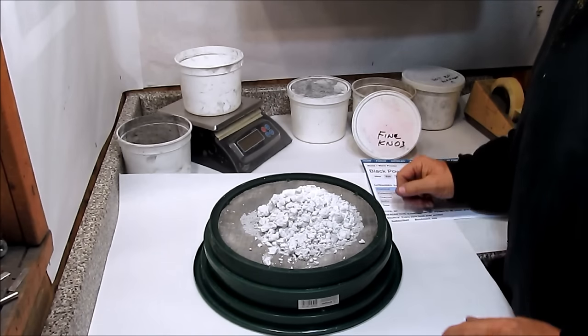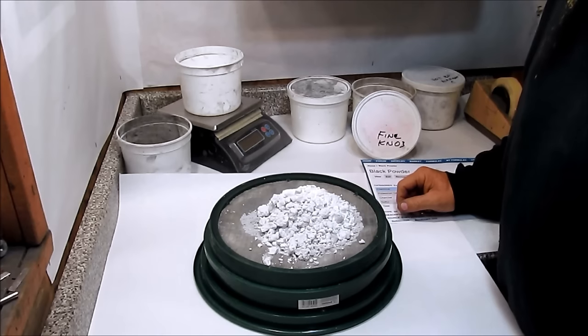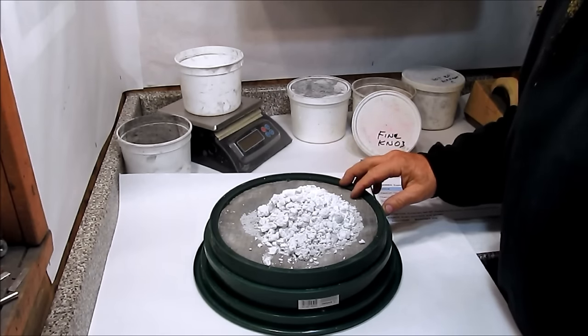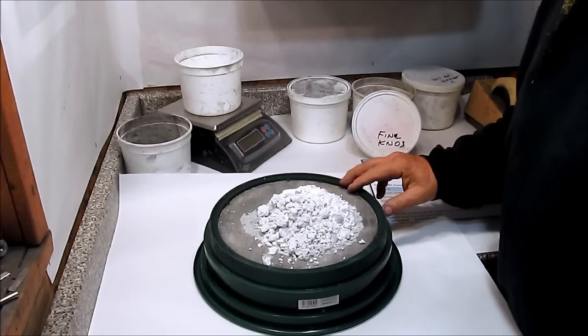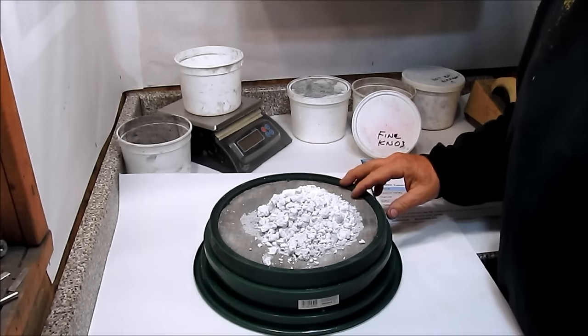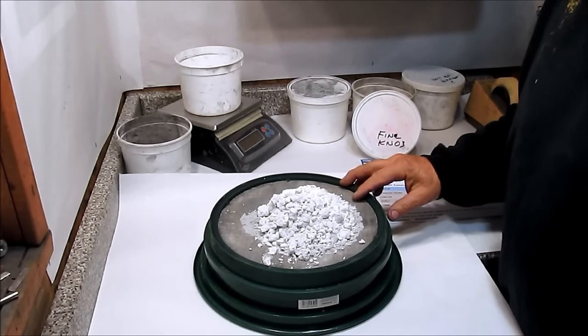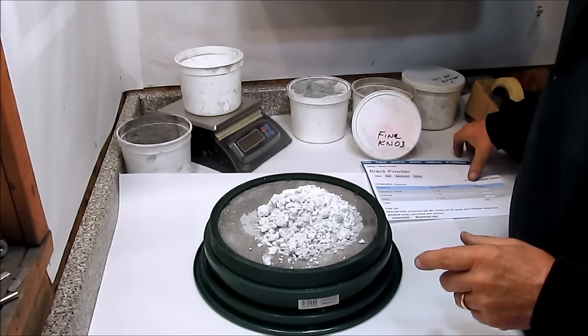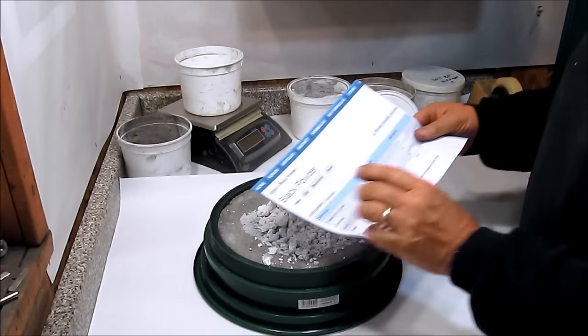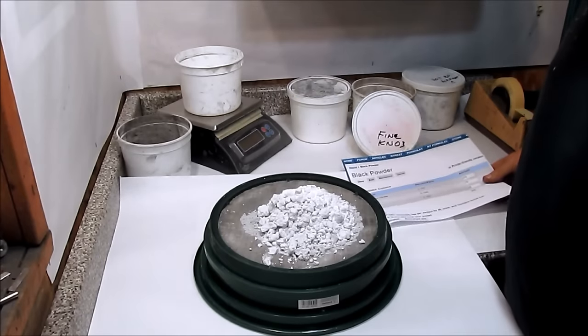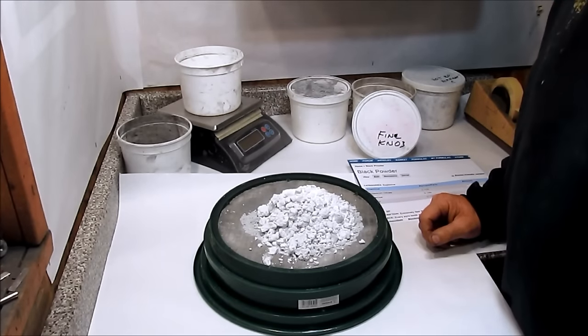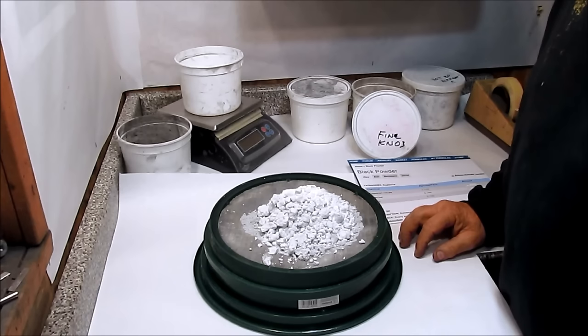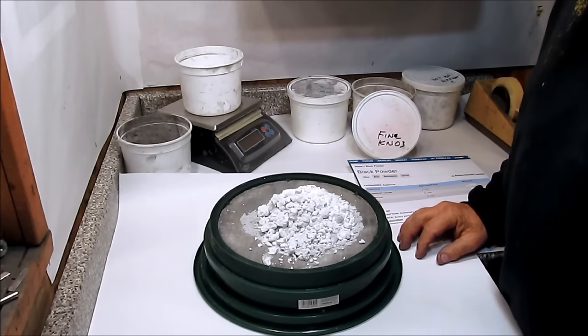Weighing is probably one of the most critical processes, skills, techniques that we have in fireworking. Almost all formulas except for a very rare exception are specified in terms of weight. When we see 75%, 15%, 10%, that is by weight not volume. So you can assume that any formula you see is going to be specified by weight and not volume.